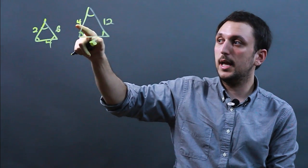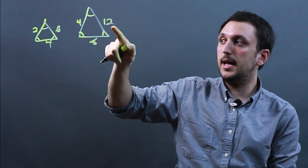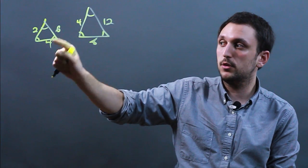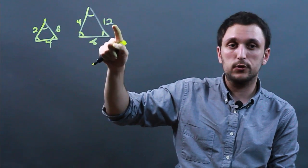or it could be 8, 16, and 24. Basically, if this is 2 and this is 4, we say we're multiplying by 2, so we multiply by 2, and we multiply by 2.